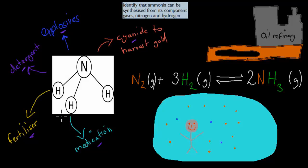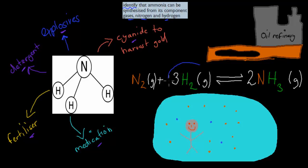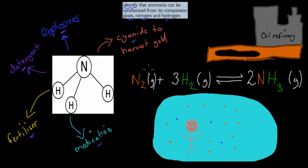More specifically, how we can combine certain elements to make ammonia. The dot point says: identify that ammonia can be synthesized from its component gases, nitrogen and hydrogen. The equation is: one mole of nitrogen gas plus three moles of hydrogen gas produces two moles of ammonia. The key point is we require nitrogen and hydrogen in a one-to-three ratio to make ammonia.